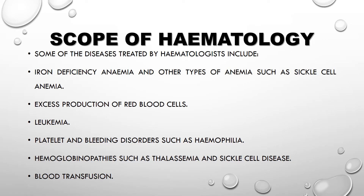Scope of hematology: Diseases studied by hematologists include iron deficiency anemia and other types of anemia such as sickle cell anemia, excess production of red blood cells, leukemia, and platelet and bleeding disorders such as hemophilia.